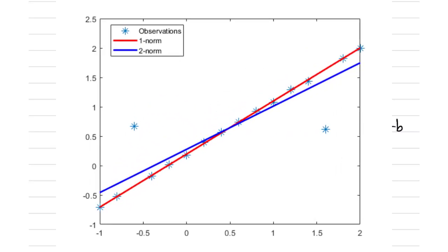Let us look at the lines obtained by using L1 and L2 norms. Since the L2 norm penalizes squared residuals, the contribution of the two observations with large error is very high. After minimization, we end up with the blue line, which is tilted so that the residuals from the points with larger error are small to the extent possible. In contrast, in the L1 norm case, the two outliers do not contribute as much to the overall penalty, and the red line passes through all the remaining points but is farther from the two outliers.